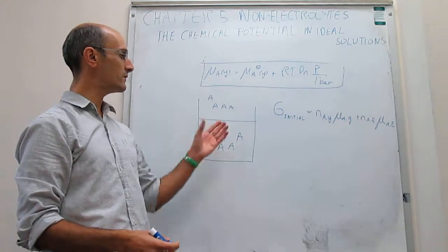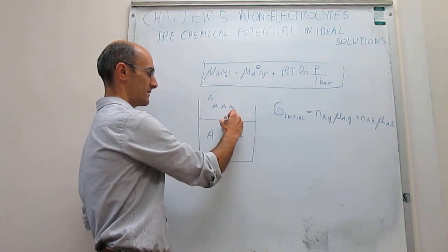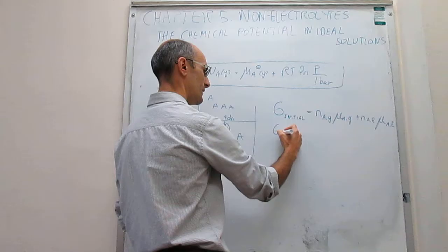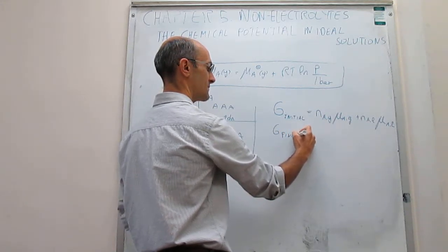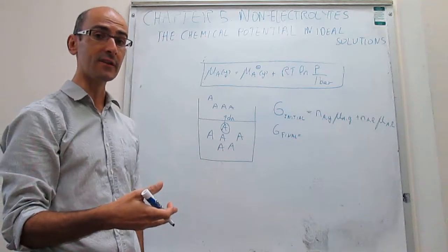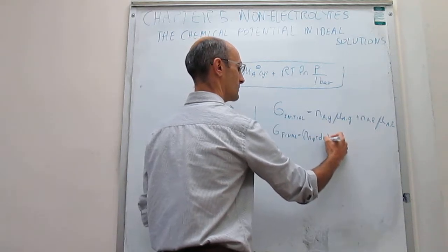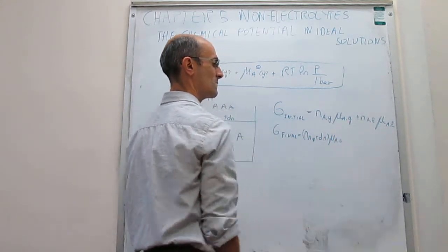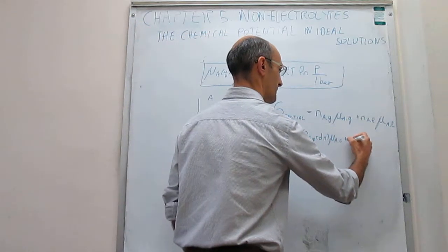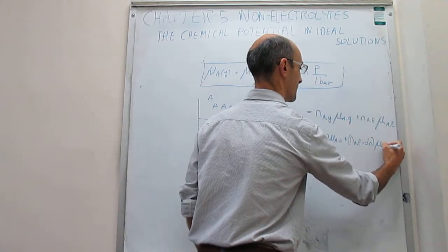Now let's assume that an infinitesimal bit of A — a differential dN, an infinitesimal amount of moles — goes into the gas phase. The amount of moles of A in the gas phase increases by dN, so we get (N_A,gas + dN) times the chemical potential of A in the gas, and the number of moles of A in the liquid phase decreases by dN, giving (N_A,liquid − dN) times the chemical potential of A in the liquid.